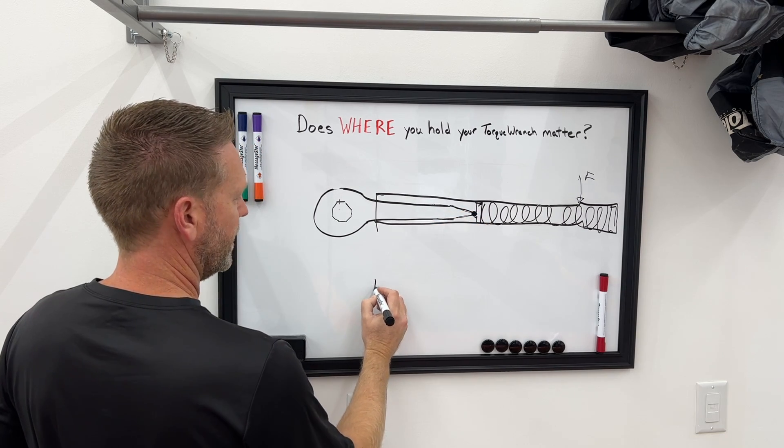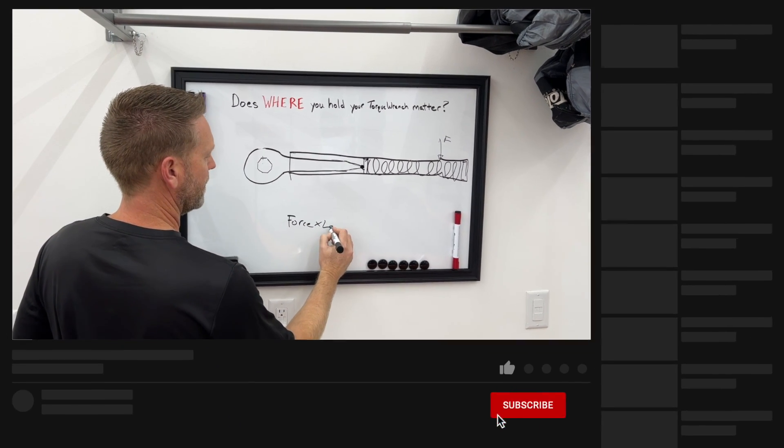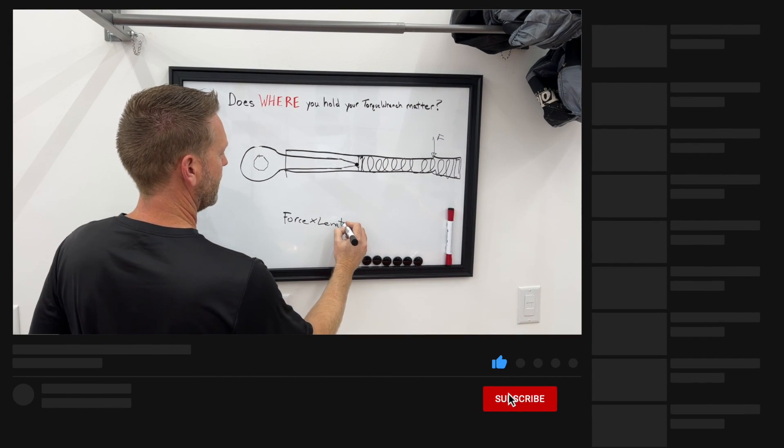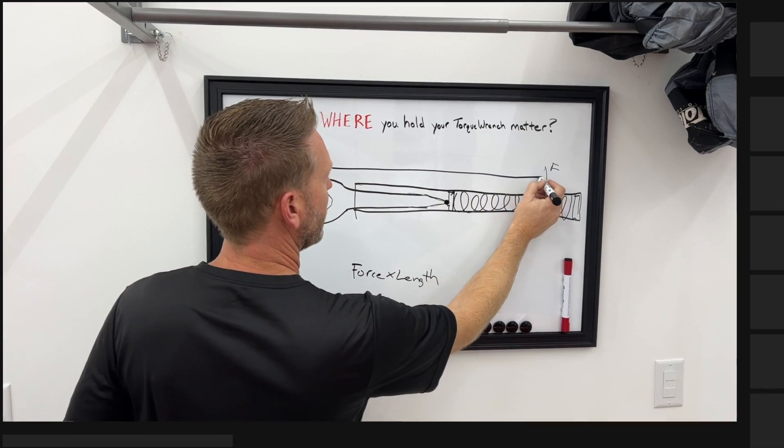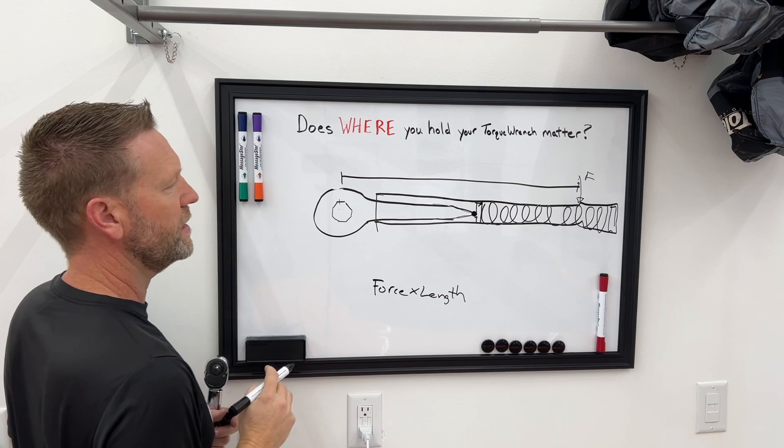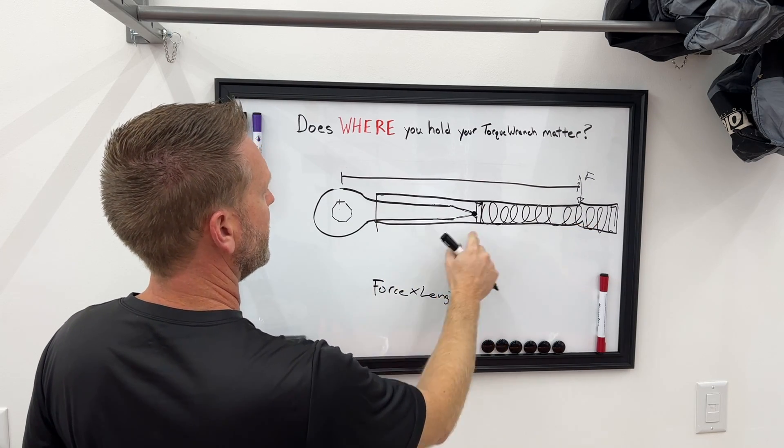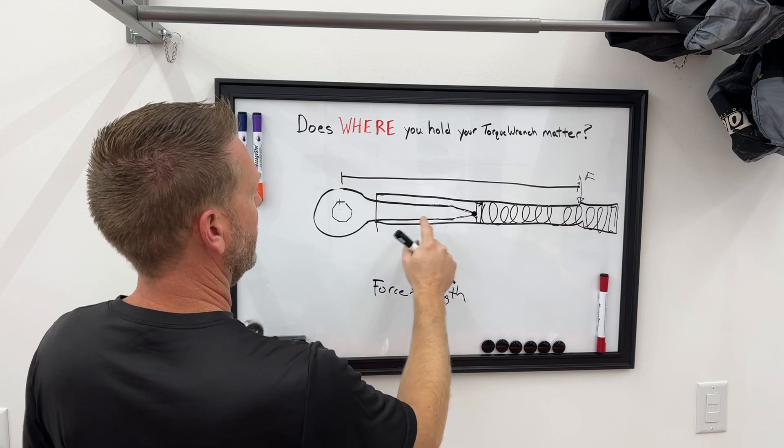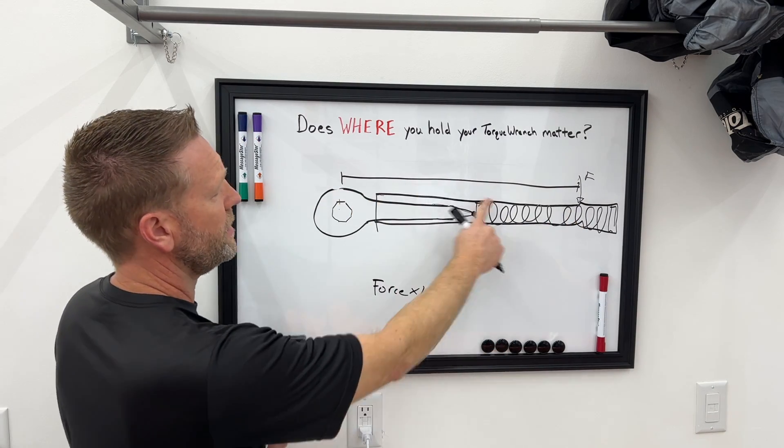So with our old calculation of force times length, what we were counting on was that this was the length, right? And you can see that the pivot point is actually here, not all the way from here. So now you can see that this was our old length.